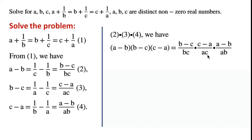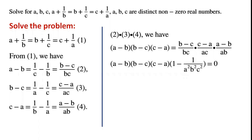times C minus A over AC times A minus B over AB. By rearranging the equation, we have A minus B times B minus C times C minus A times 1 minus 1 over A squared B squared C squared equals 0.